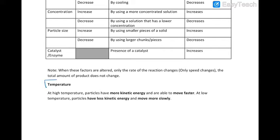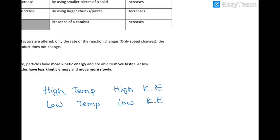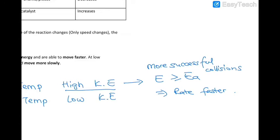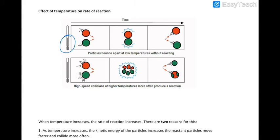Let's look at temperature first. Temperature measures the kinetic energy of a system, so the higher the temperature, the more kinetic energy there is. If we have particles with a high amount of energy, the chance of the energy being equal to or greater than the activation energy is higher, so there will be more successful collisions and the rate of reaction will be faster. Higher temperature implies a faster rate of reaction. As you can see here, at low temperature, particles are colliding but not reacting because they do not have enough energy.